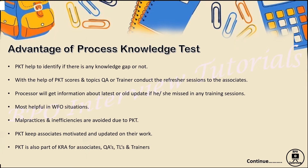PKT also helps identify malpractice or inefficiency with the associate. It keeps associates motivated — I have seen people share PKT results as rankings: first rank, second rank, third rank out of 200 associates overall. This helps them grow in their careers. PKT is also part of the KRA for associates, QA, and trainers. For example, for the training team, associates aligned to them need to score more than 95% on PKT.